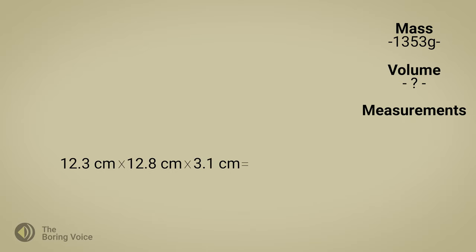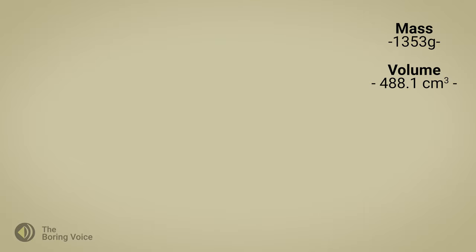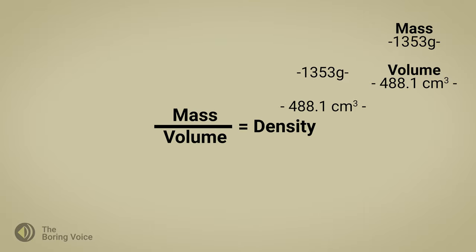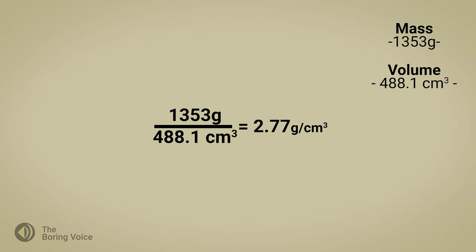Multiplying length, width, and height, I get 488.1 cubic centimeters, rounded to one decimal place. Now that I have mass and volume, I can plug these numbers into the density equation. I divide the mass by the volume, and I get a density of 2.77 grams per cubic centimeter. That is the density of this object.